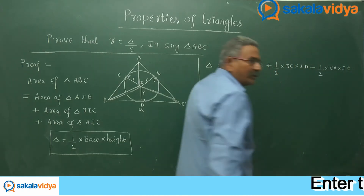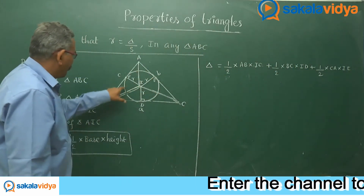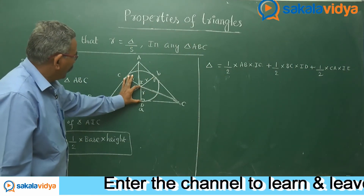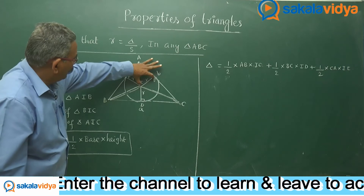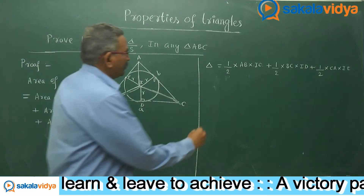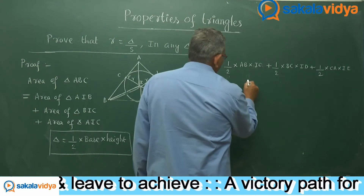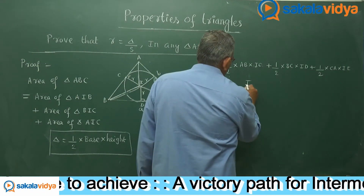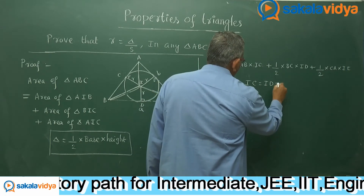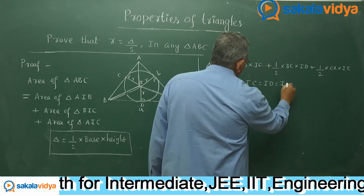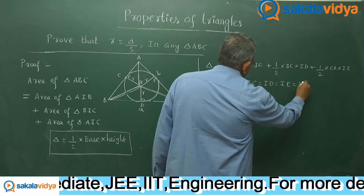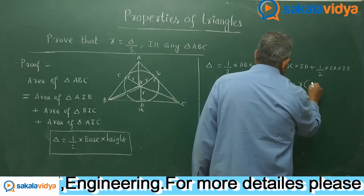In this incircle, ID equals IE equals IC equals small r, which is the inradius. So all three heights from the incenter to each side are equal to small r.